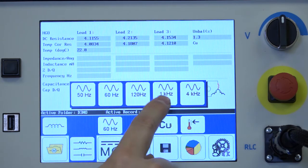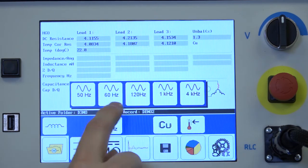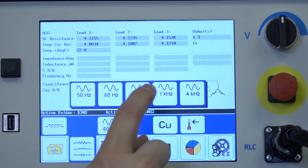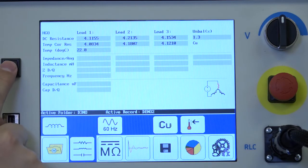50 hertz, 60 hertz, 120, 1 kilohertz, and 4 kilohertz. I'm going to select the motor nameplate frequency of 60 hertz. And again push the test button.